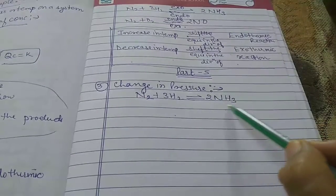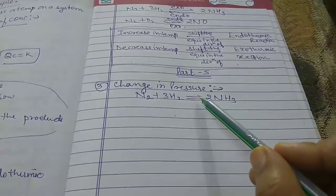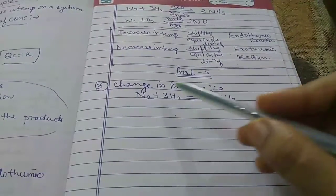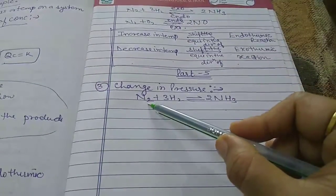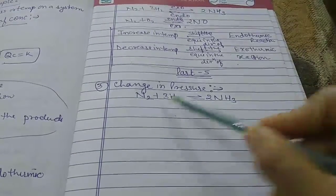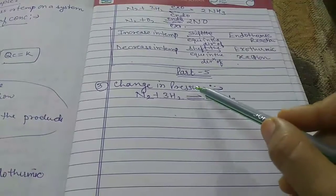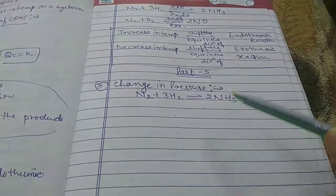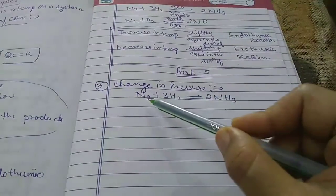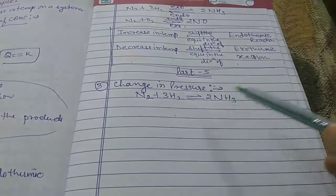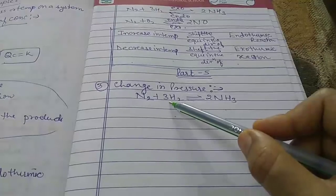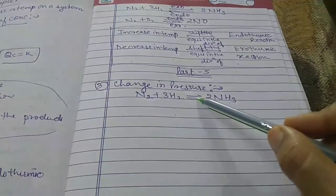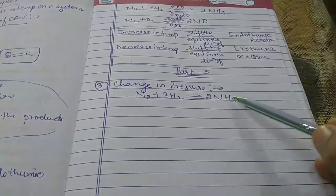The equilibrium will shift towards ammonia, i.e., the forward reaction, and more ammonia is formed. To revise: the reactant side has 3 + 1 = 4 moles, and the product side has only 2 moles. When we increase the pressure, the equilibrium shifts to the direction with the lesser number of moles. In the forward direction, N2 + 3H2 → 2NH3, and in the backward direction 2NH3 splits into N2 + 3H2. Since fewer moles are on the product side, equilibrium shifts forward and more ammonia is formed.